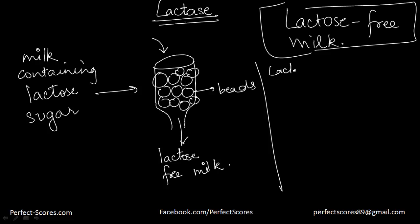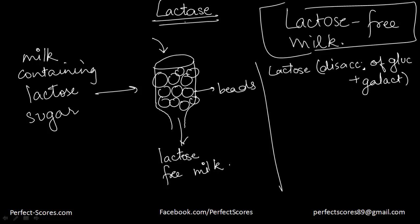Lactose, the sugar, is a disaccharide of glucose and galactose. It can be broken down by the enzyme lactase. Historically, mammals experience a decrease in lactase production after weaning, leading to lactose intolerance — an incidence very high in Asian, African, Native American, and Aboriginal populations. Lactose-free milk can be produced by purifying lactase from yeast or bacteria and binding it to an inert substance such as alginate beads.